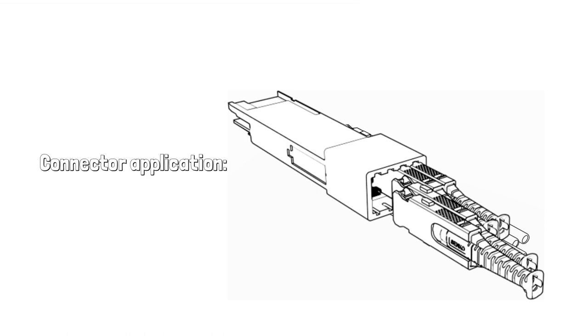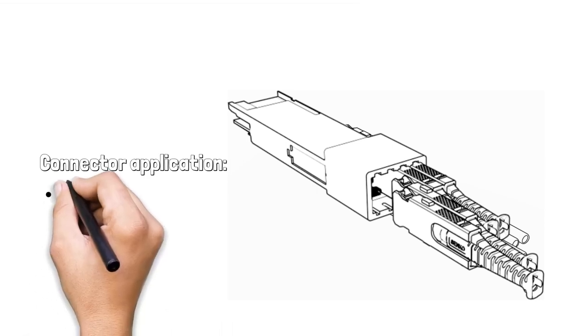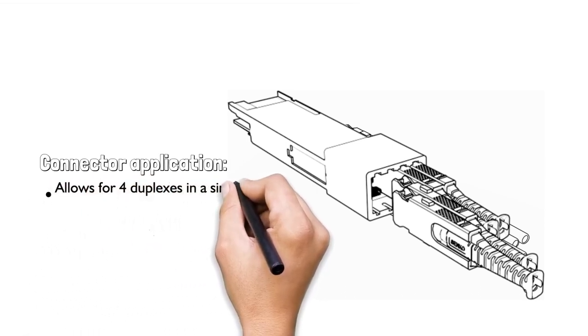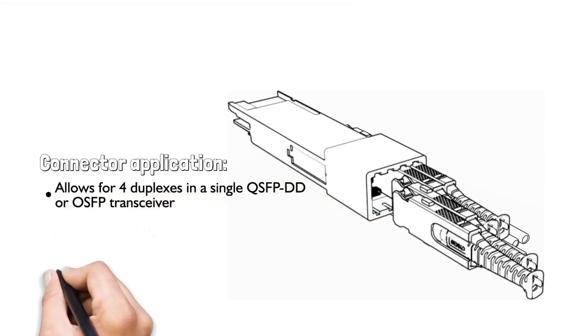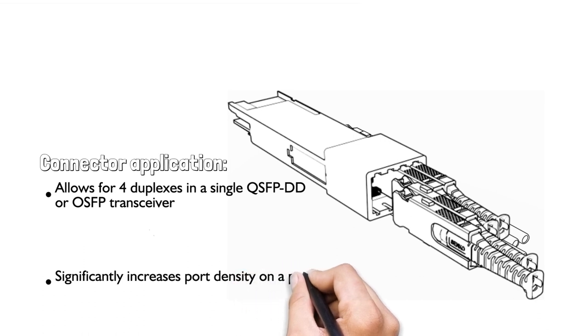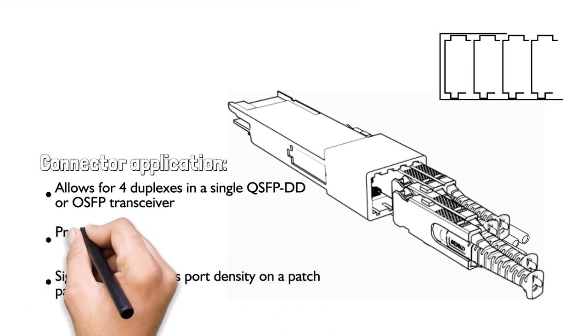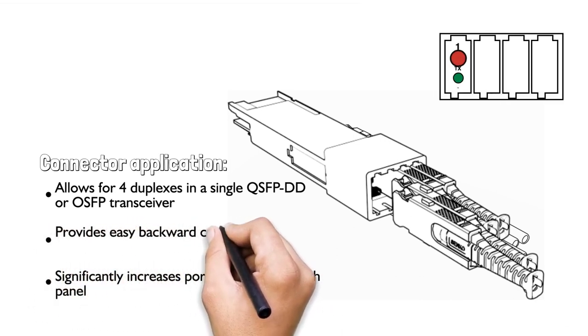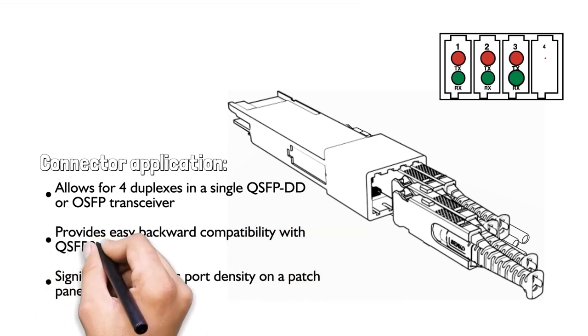The SN connector design enables four individual duplexes to be connected into a single QSFP DD or OSFP transceiver. As each duplex can be managed in its own separate cord, the SN connector also provides easy backward compatibility with QSFP 28 and QSFP 56.